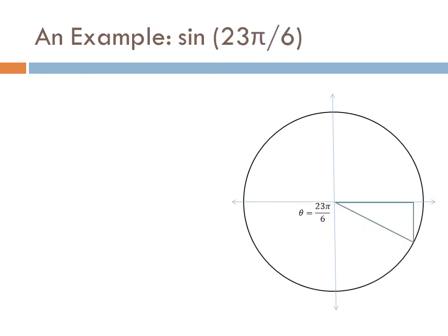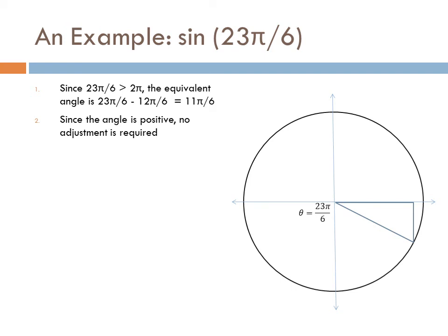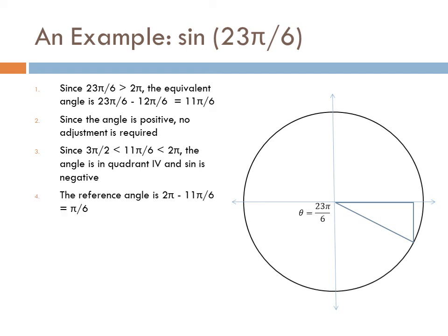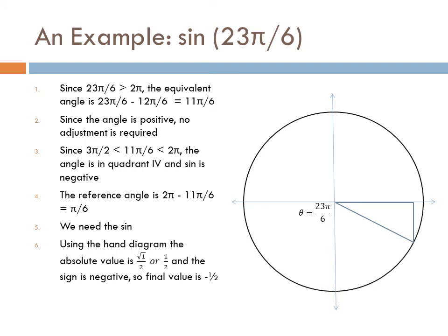Let's look at one where we do have an extra rotation: the sine of 23 pi over 6. We're greater than 2 pi, so removing the extra rotation, we end up with 11 pi over 6. It's positive, so no negative adjustment needed. Since we are between 3 pi over 2 and 2 pi, the angle is in quadrant 4. Remembering 'all students take calculus,' the sine is negative. The reference angle is pi over 6. Using the hand diagram, the absolute value is √1/2, or just 1/2. The sine is negative, so the final value is negative one half.